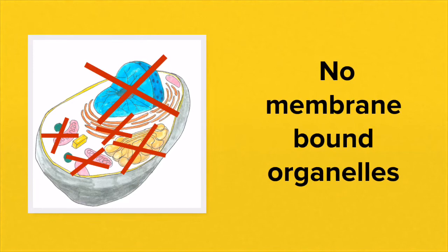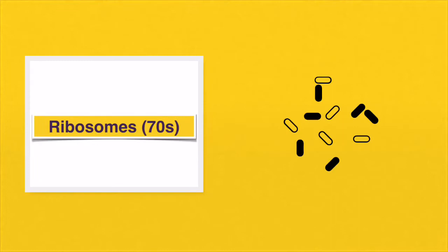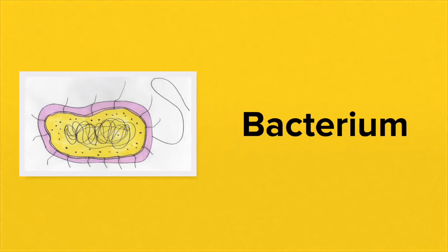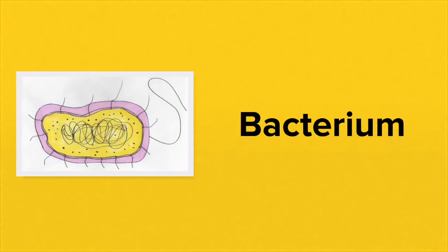There are no membrane-bound organelles in prokaryotic cells, so there would be no mitochondria. However, there can be ribosomes — those organelles responsible for making proteins. They are not membrane-bound. Here's a bacterium and you can see that there is no membrane-bound nucleus; the DNA is simply in the centre of the cell, and you can see those small ribosomes too.